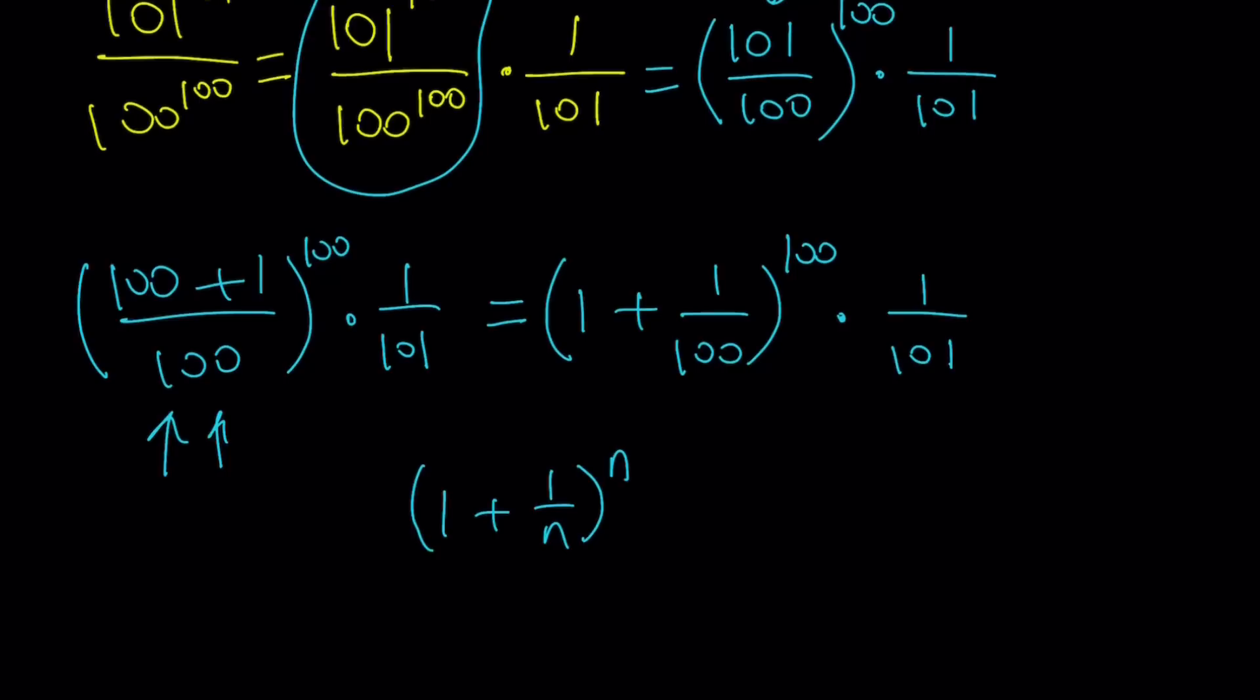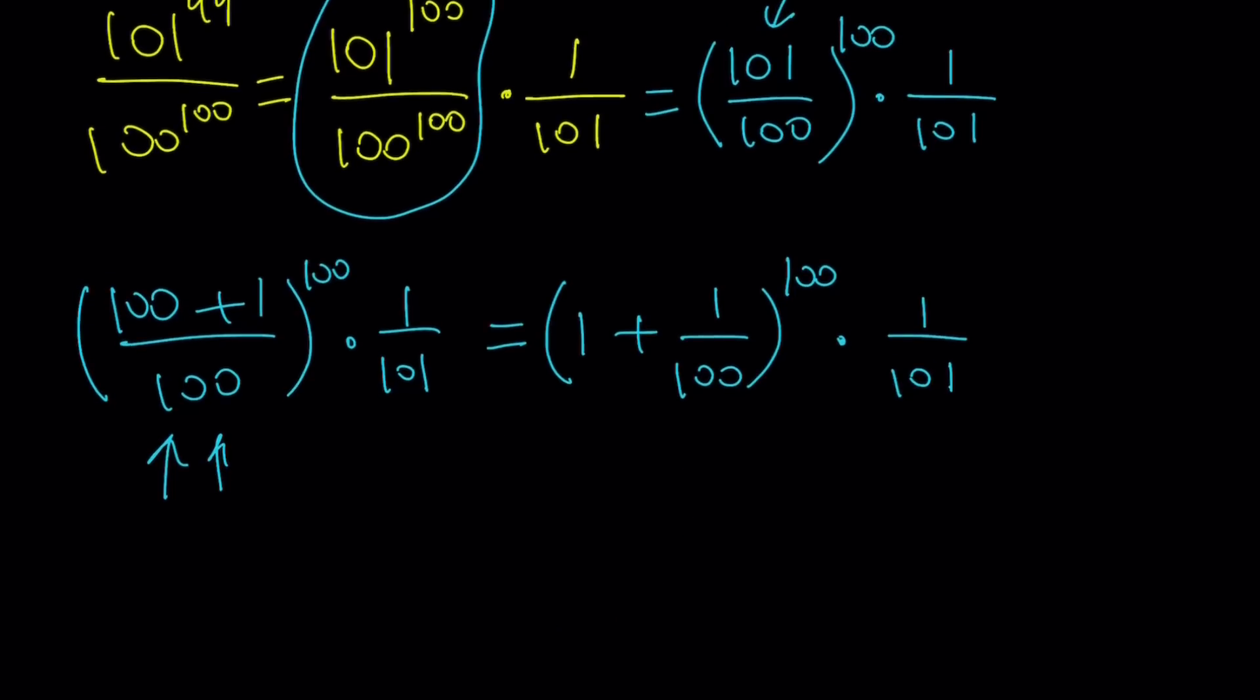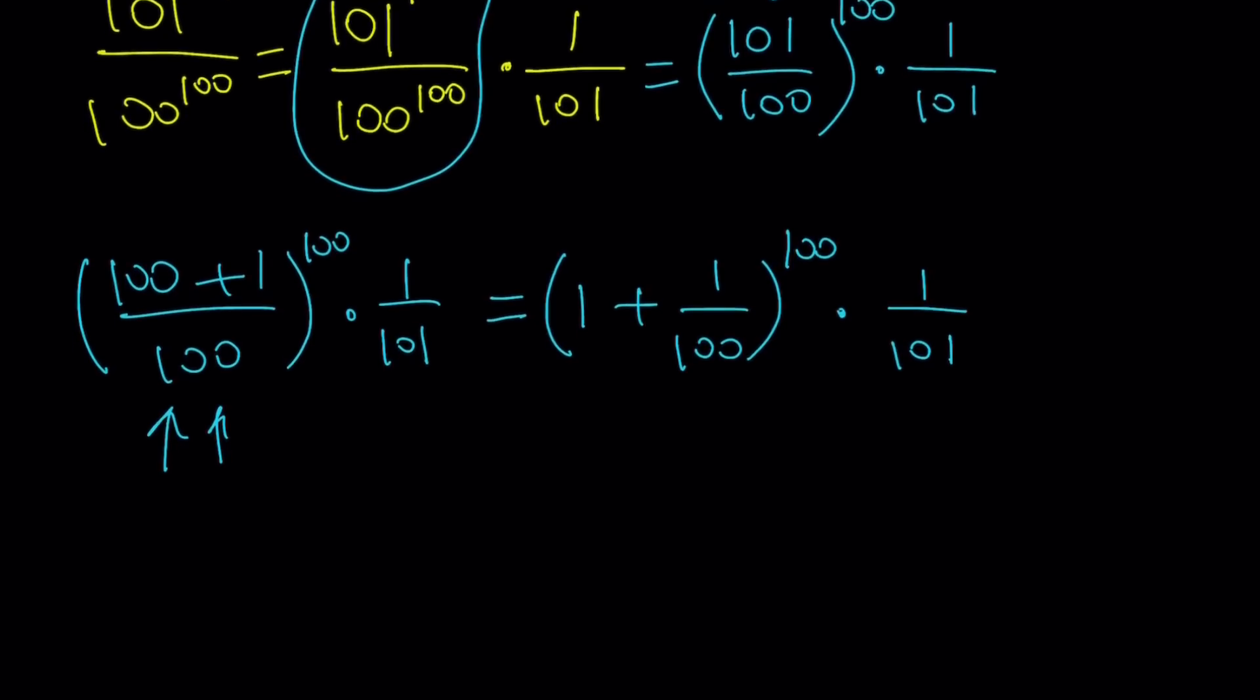My goal was to get something that looks like 1 plus 1 over n to the power n. We're actually going to look at this stuff in a different way as well with my second approach. But this is a very special type of expression. Hopefully you are familiar with this if you've done logarithms and even a little bit of calculus. I'm going to make an assumption, which I'm not going to prove because I also want to talk about the second method. I'm going to assume that 1 plus 1 over 100 to the power 100 is less than 3.